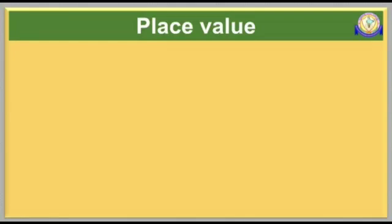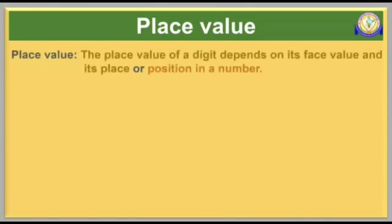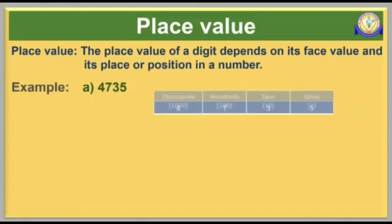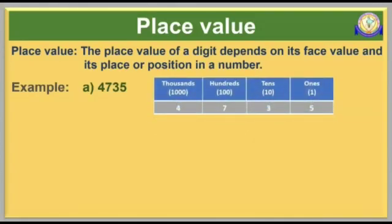Now I will explain how to write the place value of each digit in a given number. First, you should know what is place value. The name itself tells us that it depends on the place. The place value of a digit depends on its face value and its place or position in a number. To make it more clear, we will take the number 4735. To get the place value of any digit, we need to multiply the face value of a digit by the value of its place.